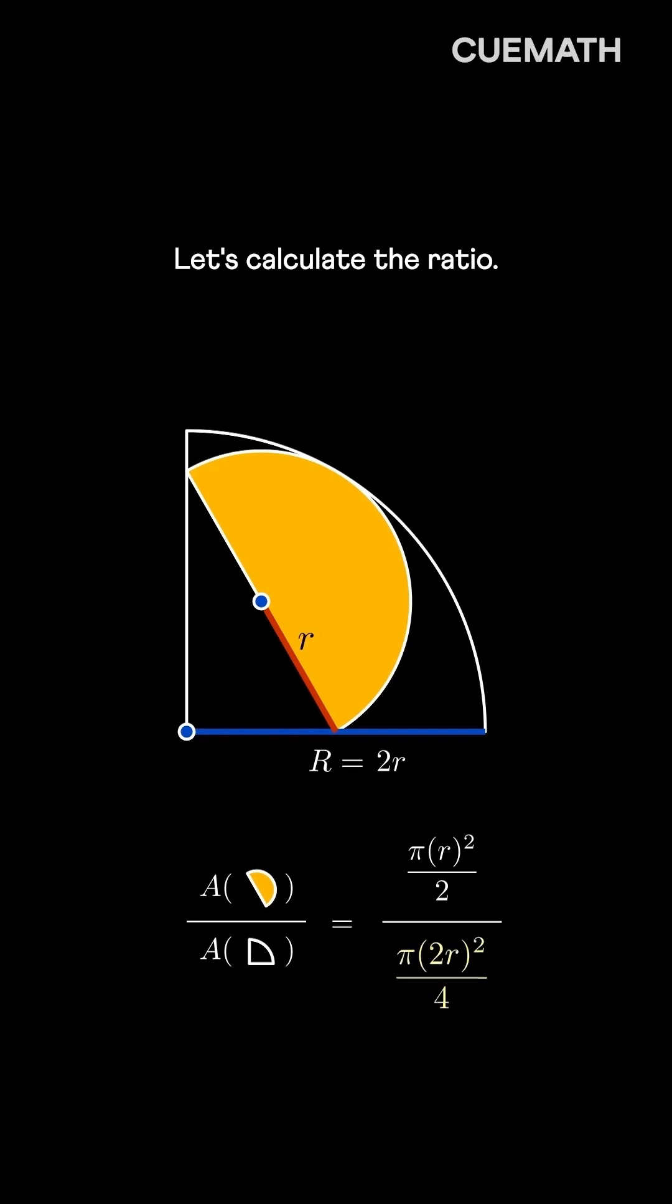Let's calculate the ratio. Simplify and cancel out the common factors. So, we get the shaded area as half of the total area.